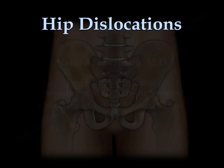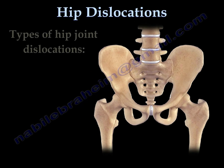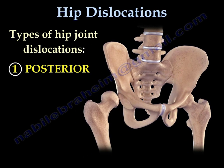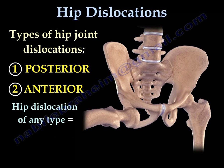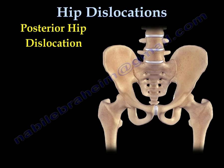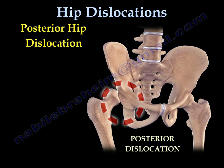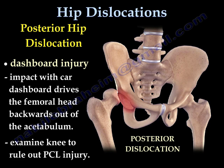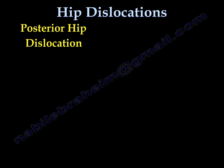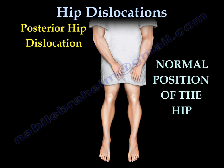Hip dislocations have two types: posterior and anterior. Hip dislocation of any type is an emergency. In posterior dislocation of the hip, which is more common, the lower limb will be flexed, adducted, and internally rotated. It could be a dashboard injury. Examine the knee to rule out PCL injury.